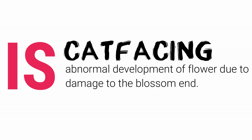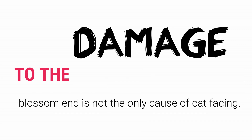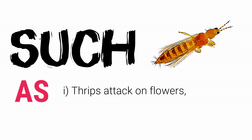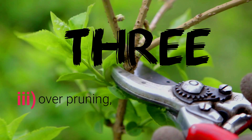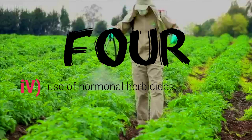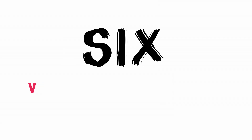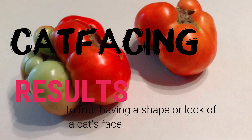Cat facing is the abnormal development of a flower due to damage to the blossom end, followed by malformed fruits. Damage to the blossom end is not the only cause of cat facing. It could also be caused by a host of other factors such as: one, thrips attack on flowers; two, excess nitrogen application to the crops as mentioned earlier; three, over pruning; four, use of hormonal herbicides; five, low temperatures; six, physical damage to the blossom end. Cat facing results in the fruit having a shape or look of a cat's face.